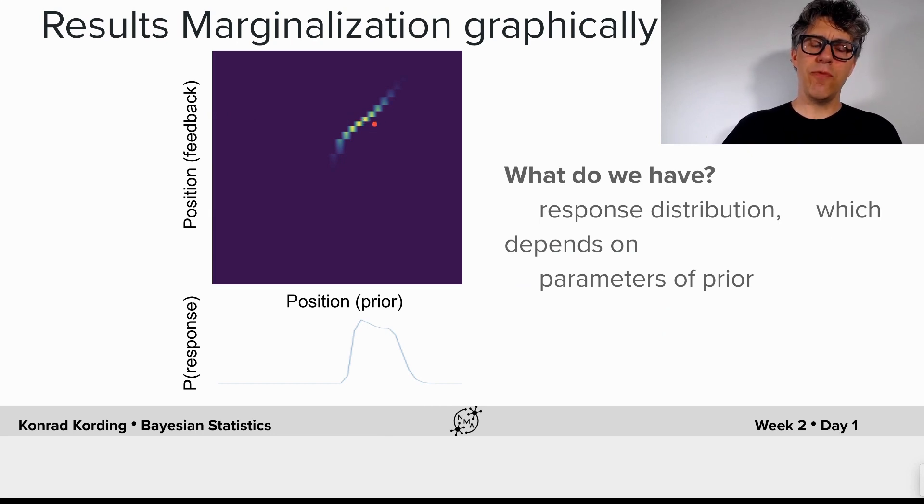Here we see if we marginalize, which is literally we add everything to the margin of this matrix, we're going to get a response distribution here. Now, what do we have? We have the response distribution, which depends on the parameters of the prior.